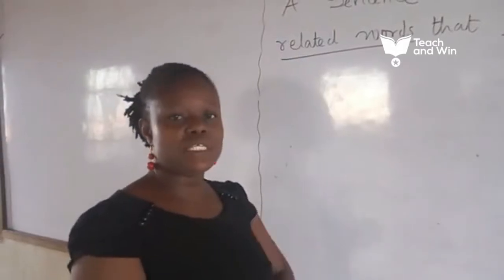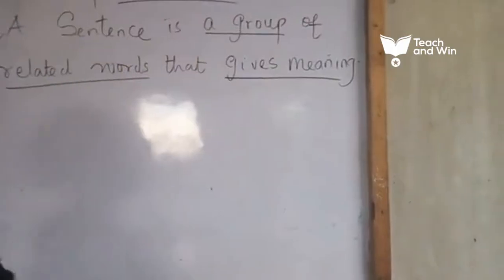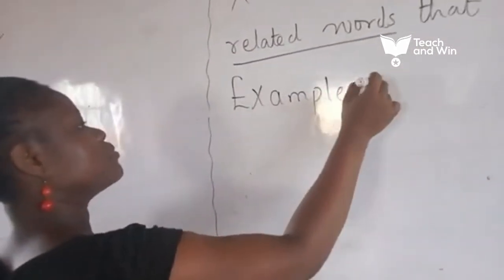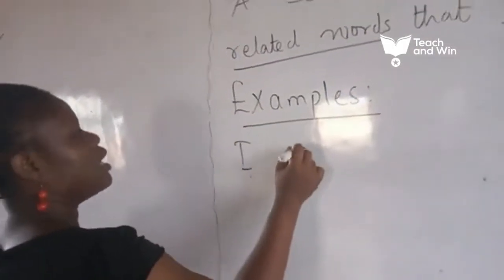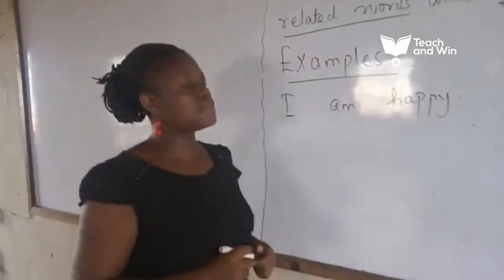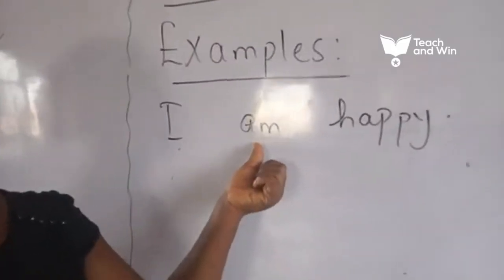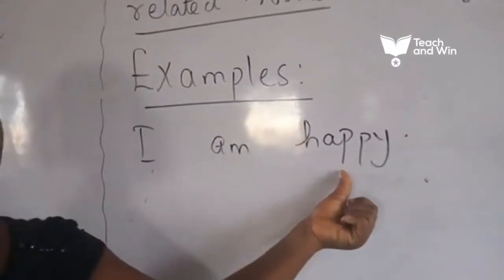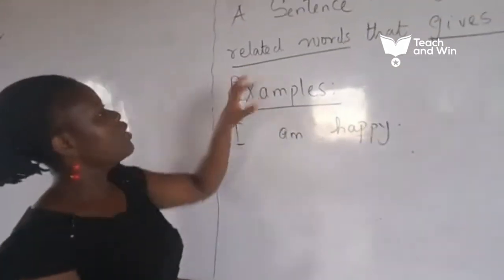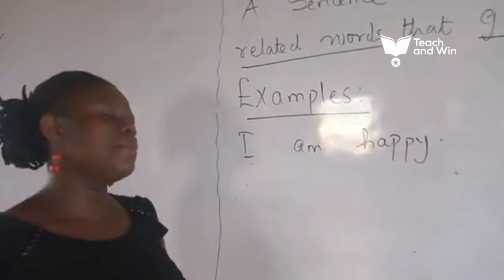Let's take varied examples of sentences and see how they are related and also how they can give meaning. Now, there are certain examples. I am happy. This is a sentence. You have the pronoun 'I', you have a verb 'am', and you have an adjective 'happy'. These are a group of words. Now, how are they related? Let's look at the relativeness of these words to become a sentence.